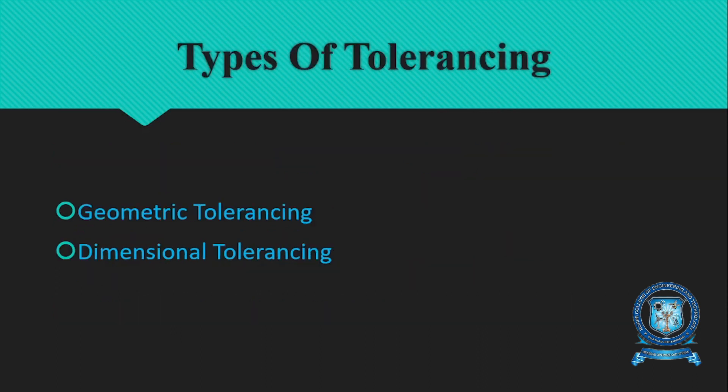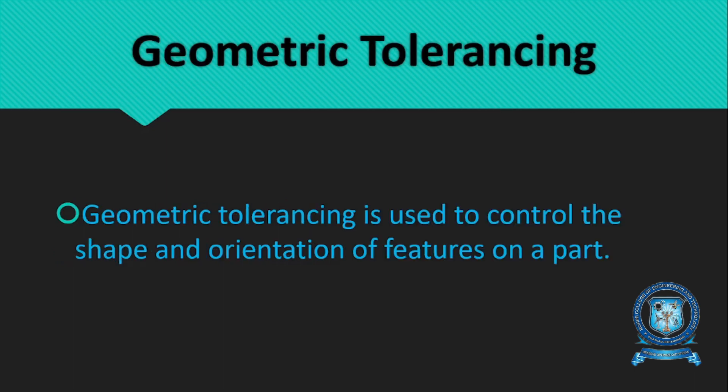There are two different types of Tolerance Symbols. One is Geometric Tolerance Symbols and another one is Dimensional Tolerance Symbols. Geometric Tolerance Symbols are used to control the shape and orientation of features on a part.